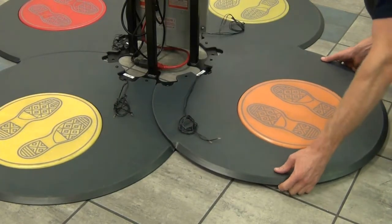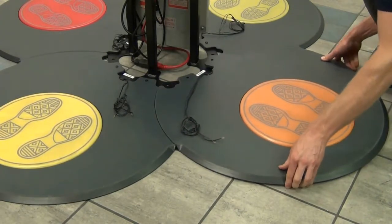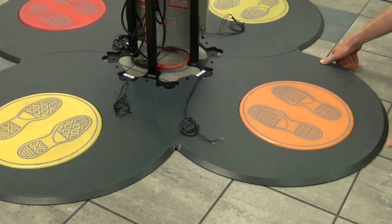Install the mats following the color labels on the base frame. All the mats should locate on pins and interlock with each other.